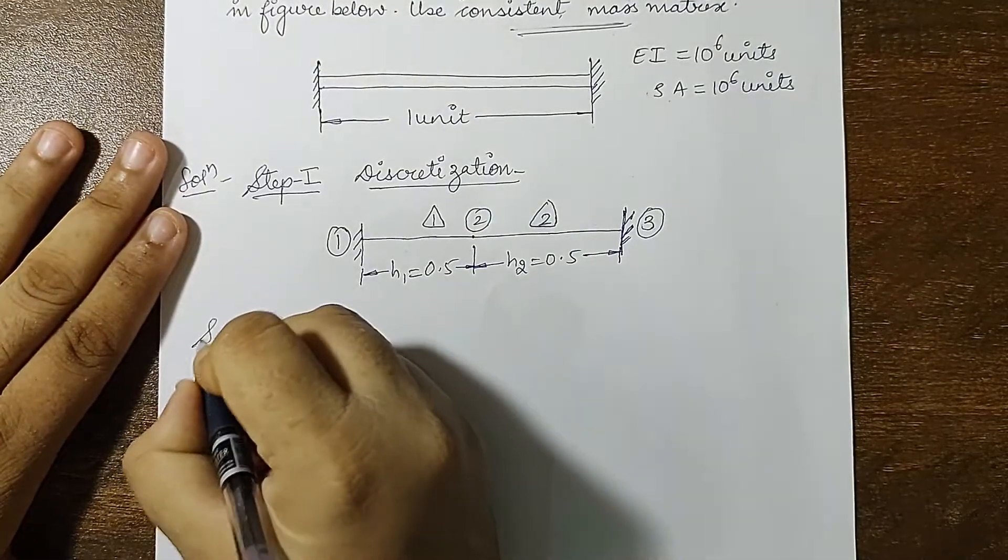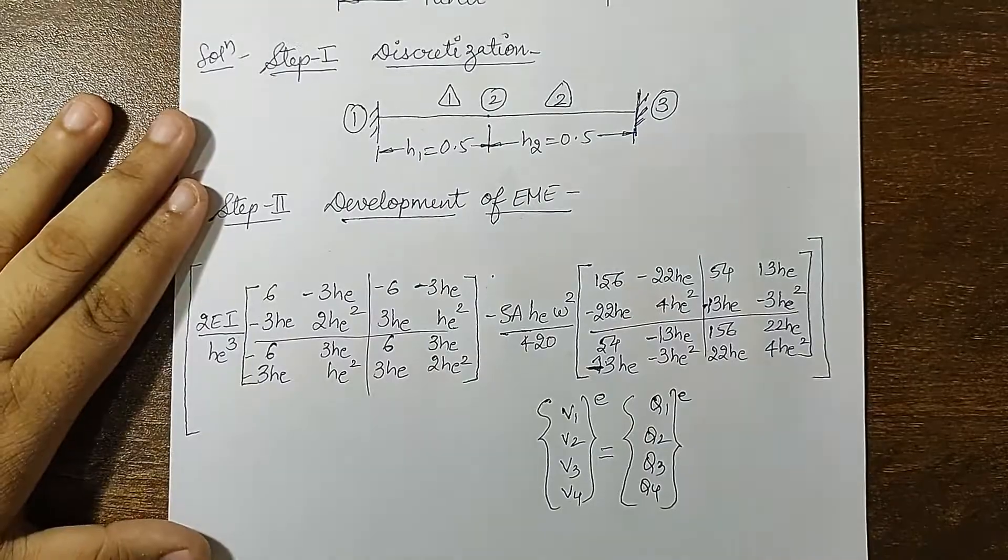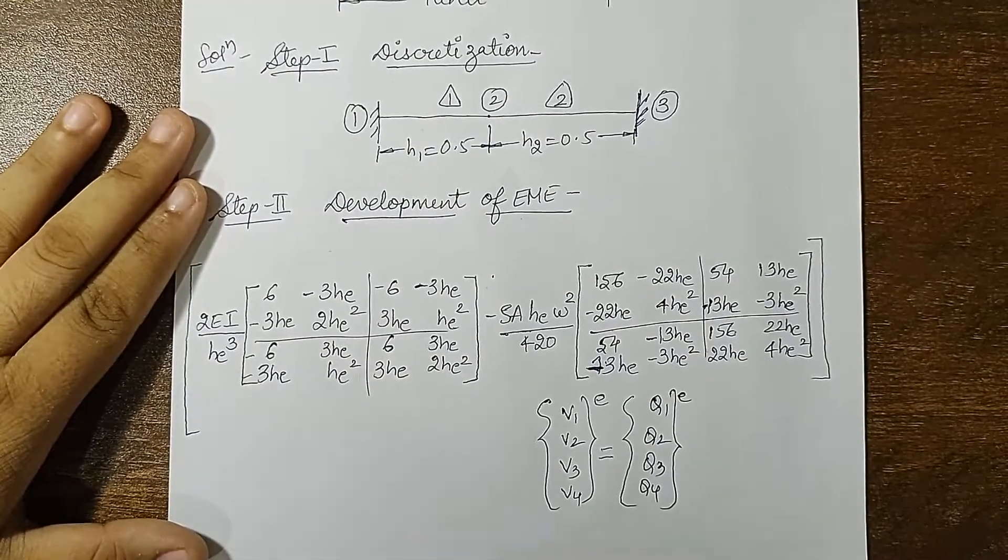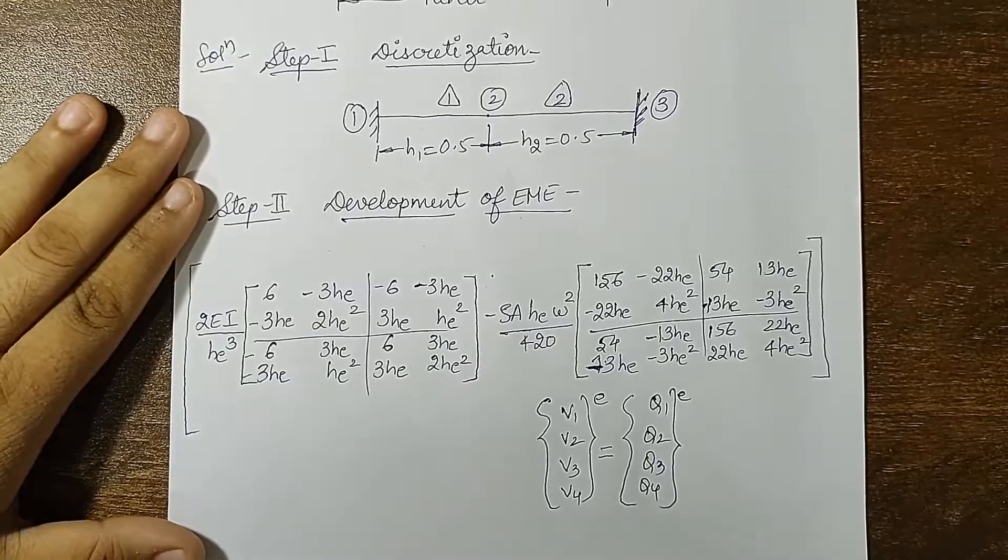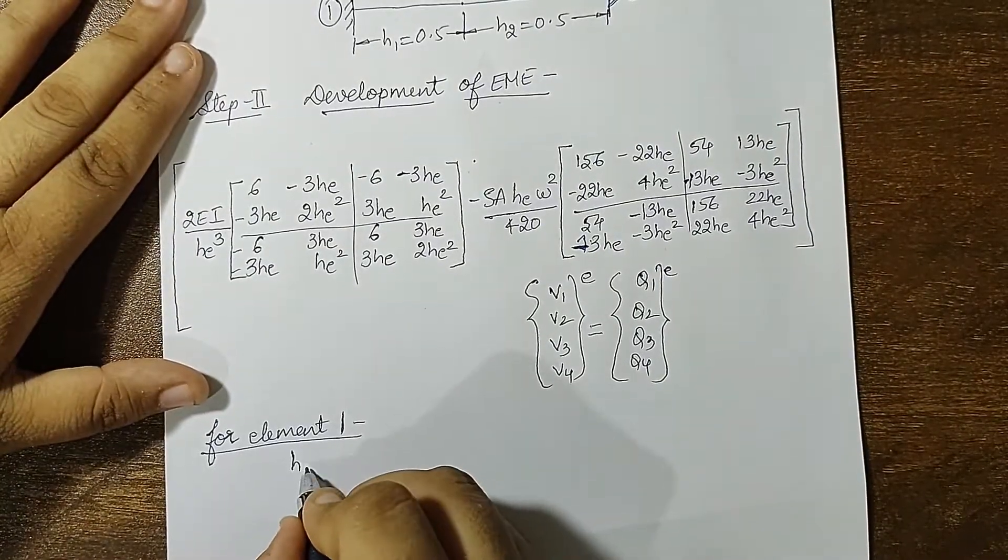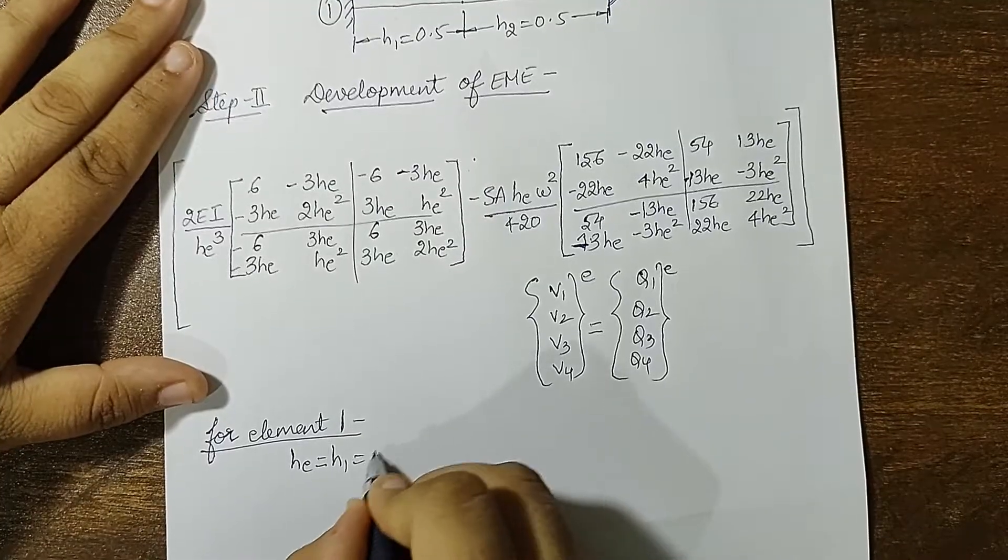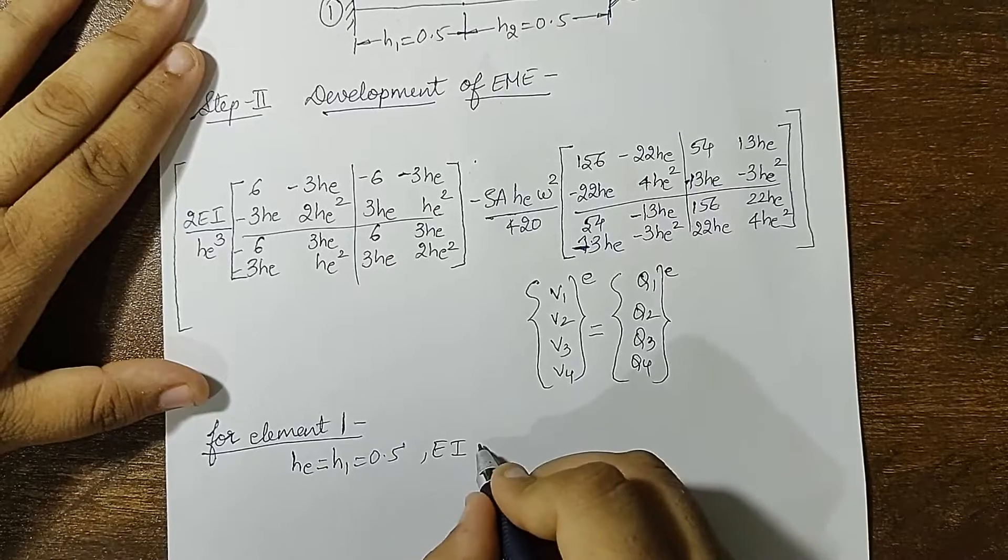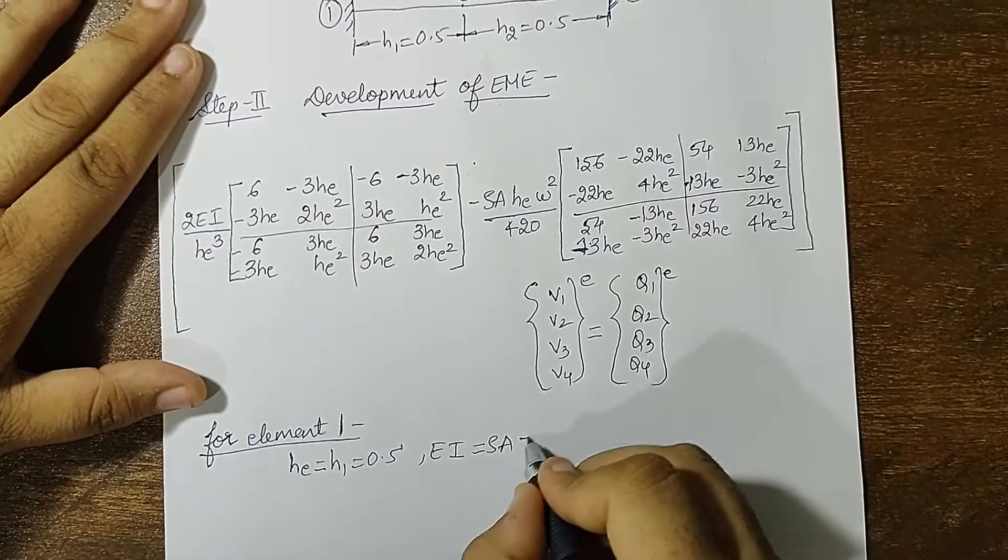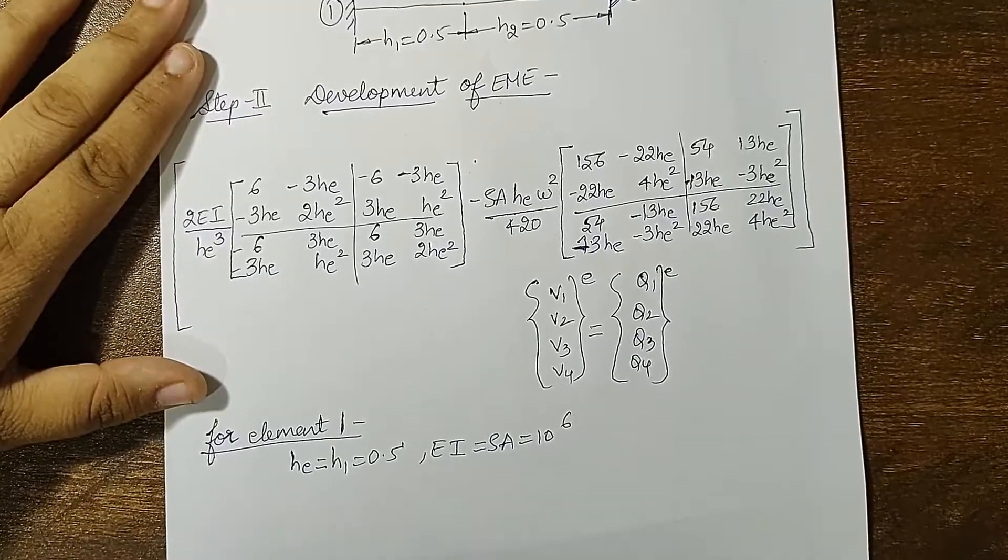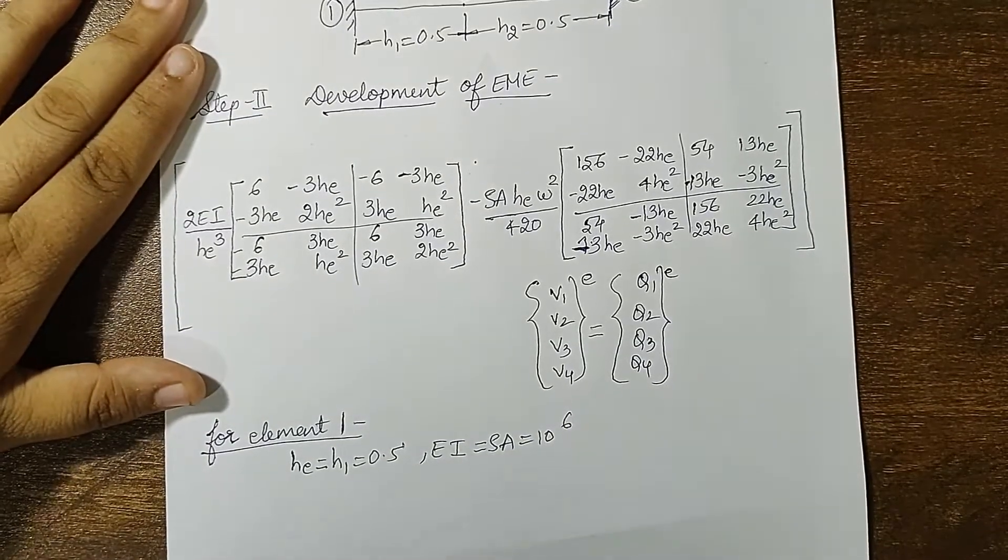Next I will go to my step 2 which is development of EME. This is the EME for the beam under transverse vibration considering consistent mass matrix. Now we will solve for element 1. For element 1, the value of HE is H1 which is 0.5 and E into I is 10 raised to 6. Also rho into A is 10 raised to 6 units.